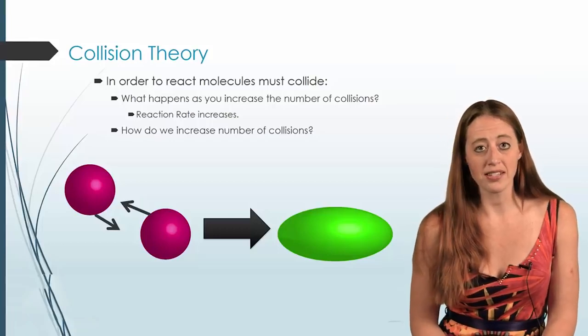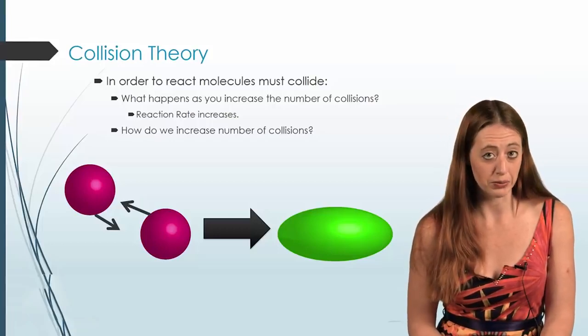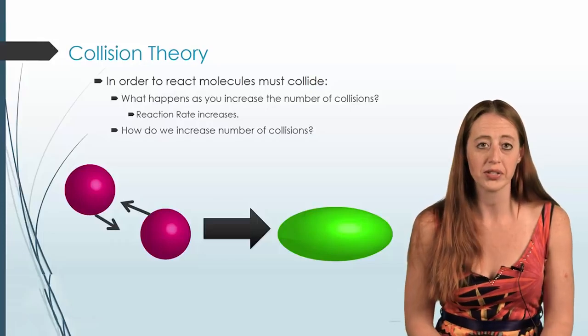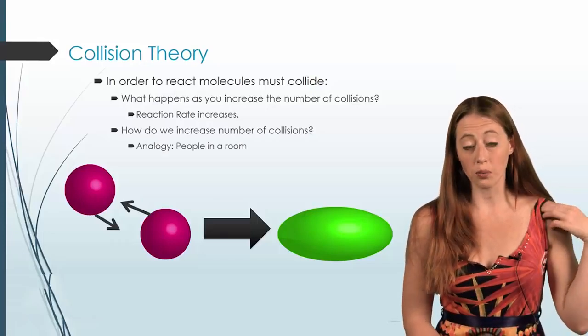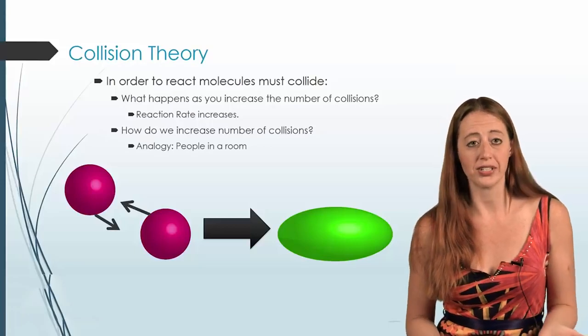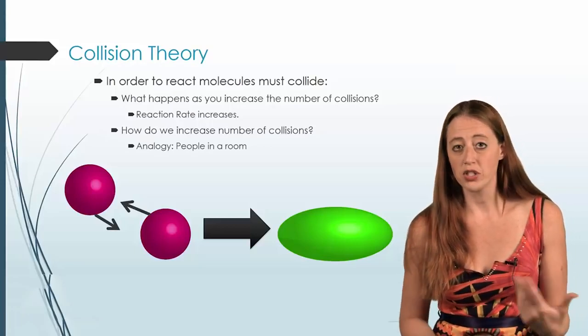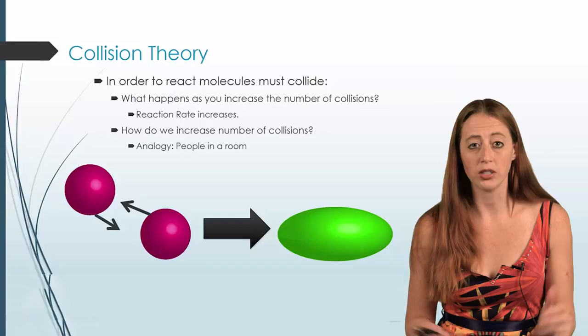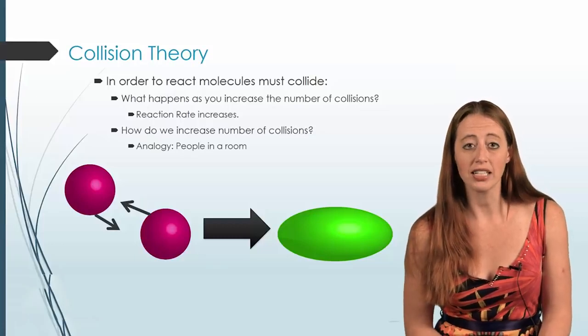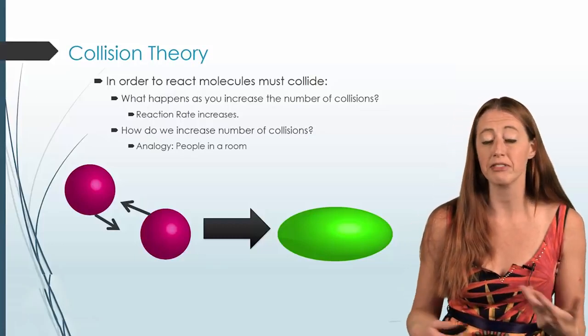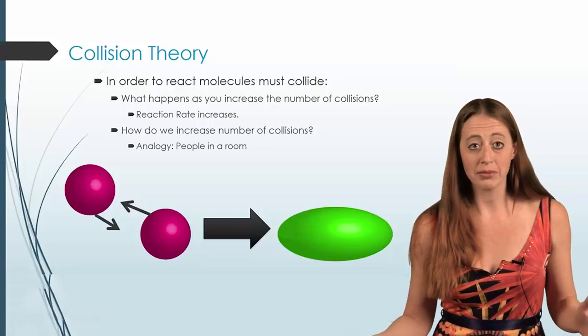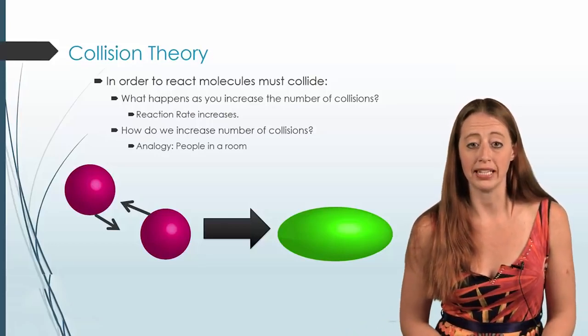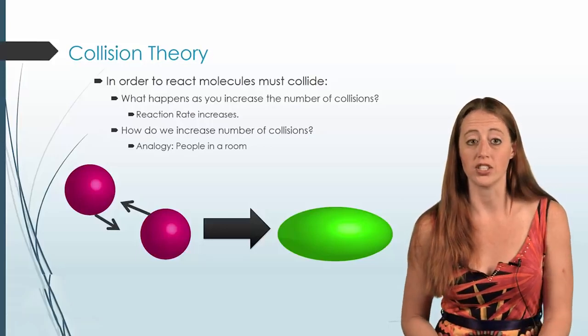One of the easiest ways to think about this is to think about people running around in a room and say how would you increase their number of collisions? So one of the things that we could do is just increase the number of people. If I put two people in a living room or even a lecture hall, they're not going to collide with each other very often. There's going to be a very low rate of collisions. But now if I take that same living room and I put 15 people in it, there's going to be far more collisions.